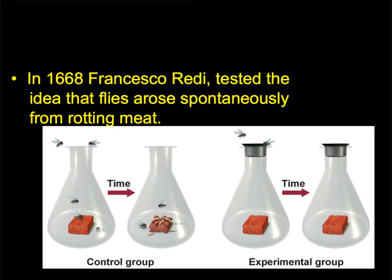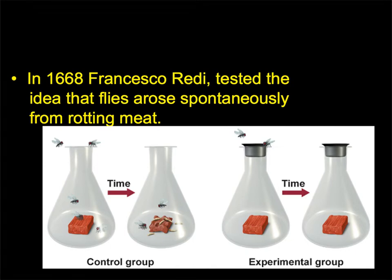If you think about the variables: the independent variable was whether the container was closed or open. The control group was the open container and the experimental group was the closed container. The dependent variable was the result — whether there were flies and maggots or not.